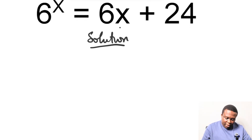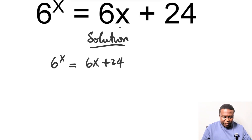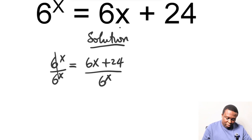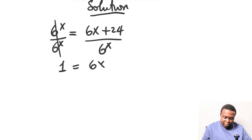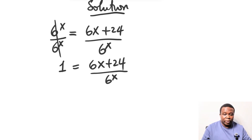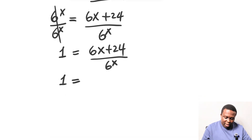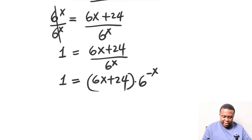We have that 6 raised to the power of x is equal to 6x plus 24. Now let's divide through by 6 raised to the power of x. We have that 1 is equal to 6x plus 24 divided by 6 raised to the power of x. We can rewrite 6 raised to the power of x — take it to the top — and the power gains a negative sign, so that becomes 6 raised to the power of minus x.